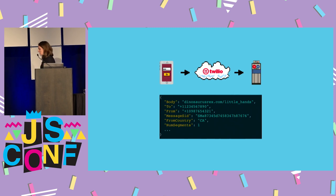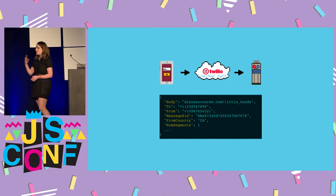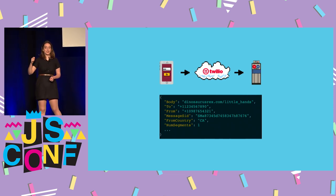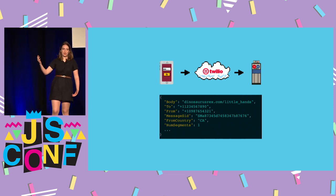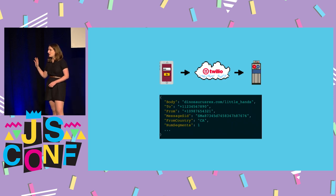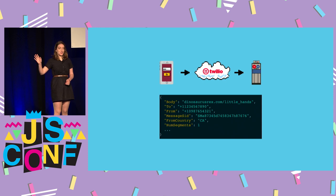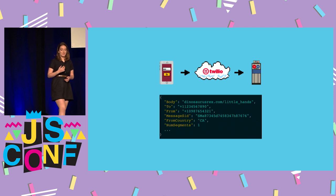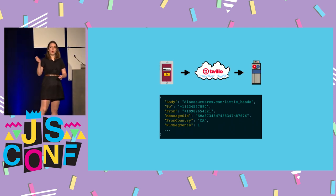This message is then sent to the Twilio number I own. Twilio takes it and turns it into a large JSON blob with a lot of information. The important parts are: the body, which is the URL being requested; the 'to' number, which is the number I have; and the 'from' number, which is the number we'll want to send the data back to at the end.